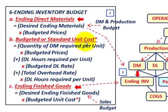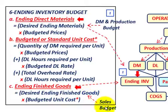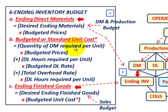Knowing the budgeted or standard unit cost, we can determine ending finished goods — that equals the desired ending finished goods from the sales budget times the budgeted unit cost. Now let's look at how we make these calculations.